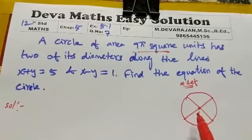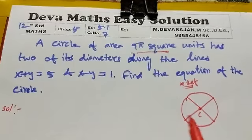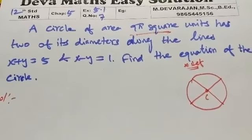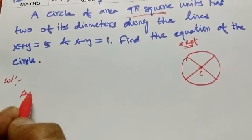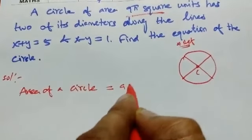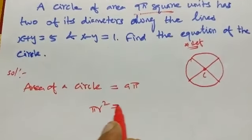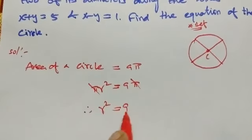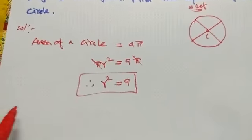The area of the circle is 9π square units. Area of a circle is πr² equal to 9π. π cancels, so r² is equal to 9.